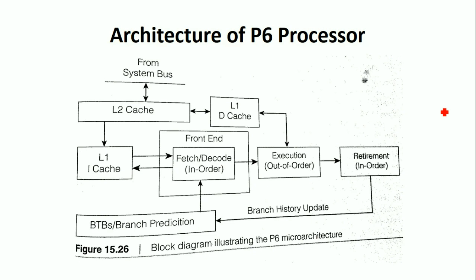The Pentium Pro processor has two cache memories: Level 1 cache and Level 2 cache. The Level 1 cache is divided into two parts — D-cache (data cache) and I-cache (instruction cache). The Pentium Pro architecture also has a branch prediction unit, fetch and decode unit, execution unit, and retirement unit.